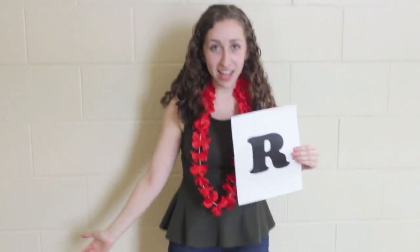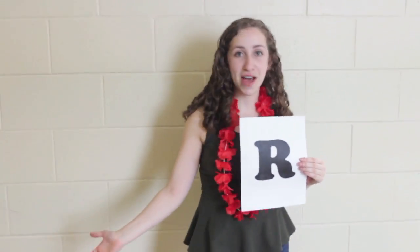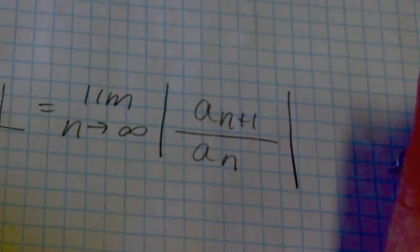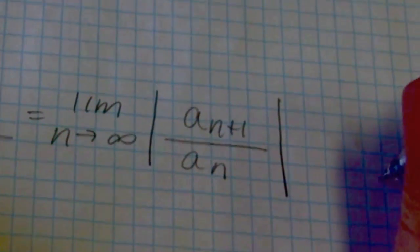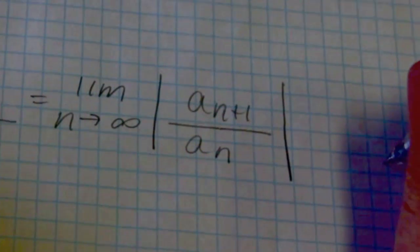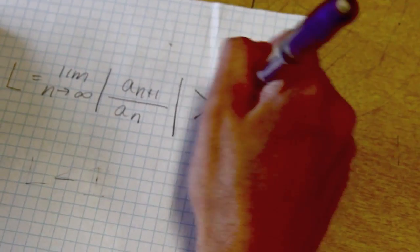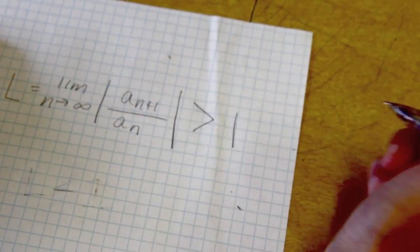Looking at R and thinking we can do it — ratio test, come on, there ain't be nothing to it. Given the sum of a sub n, L equals the limit as N approaches infinity of |a(n+1) / a(n)|. Don't forget the absolute value bars.